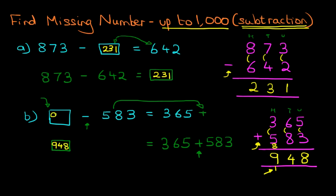We can write this in the original question. 948. So 948 minus 583 equals 365. The missing number was 948. So that is how we find the missing number for numbers up to 1000 for subtraction questions.